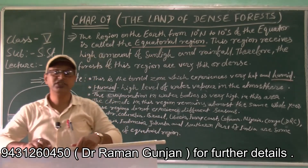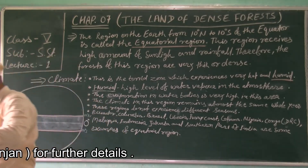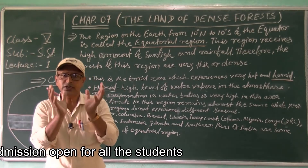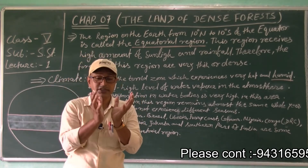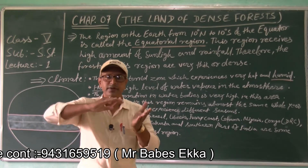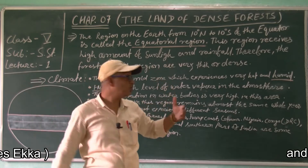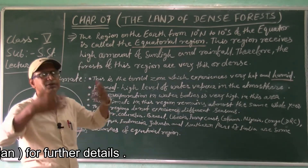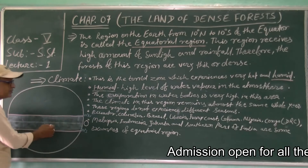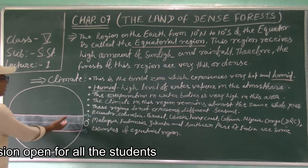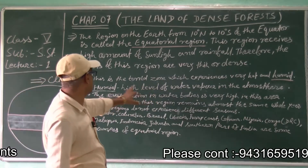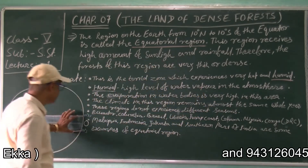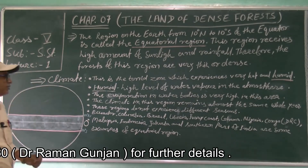Because of the large water bodies — approximately 71% of the Earth is water — and because the sun's radiation falls directly on this area, the water bodies experience very high evaporation. So evaporation from water bodies is very high in this equatorial region.